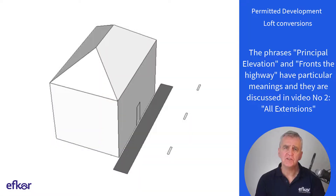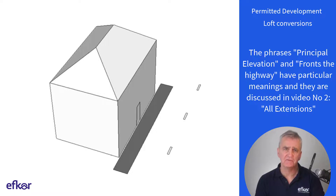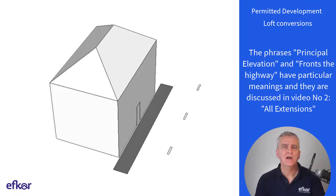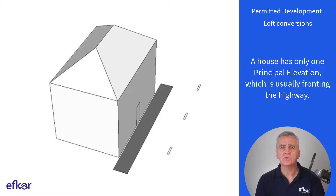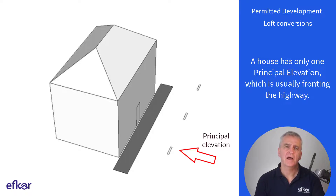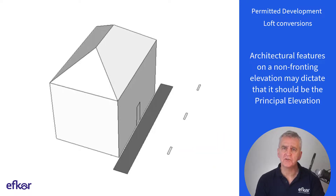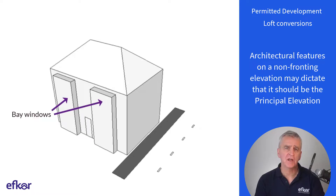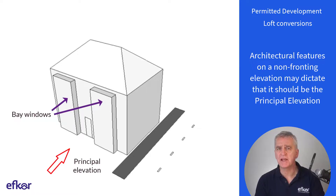The phrases 'principal elevation' and 'fronts the highway' have particular meanings, and they're discussed in video number two on all extensions. Two of the main points are: a house has only one principal elevation, usually fronting the highway; and architectural features on a non-fronting elevation may dictate that it should be the principal elevation.